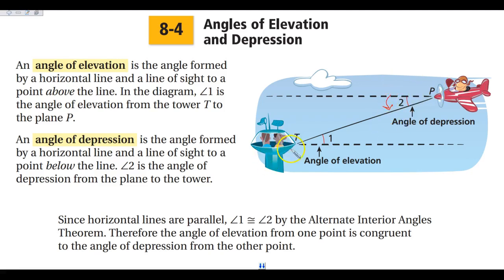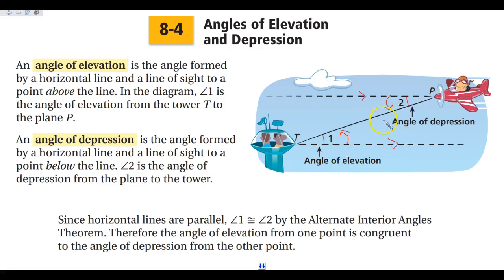The people in the tower, if they're looking straight ahead, they can't see the plane. They have to look up to actually see the plane, so that is an angle of elevation. Because the horizontal lines are parallel, our angles of elevation and depression are always going to be congruent.